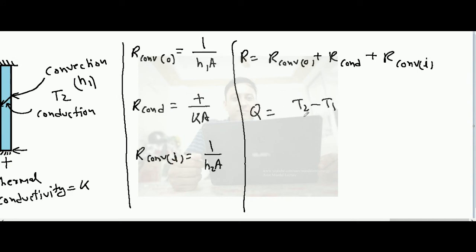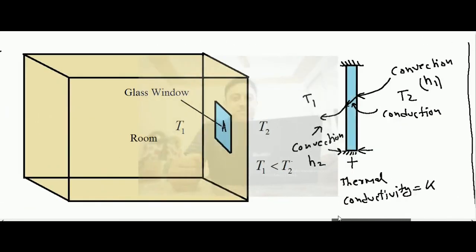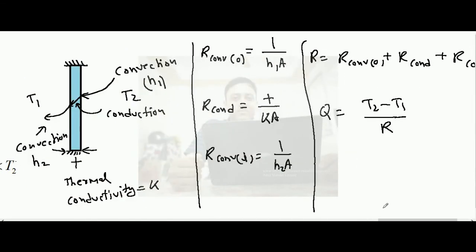The heat transfer rate is q = (t2 − t1) / R_overall. I hope with this lecture you have understood what a thermal resistance network is, how it follows the electrical resistance analogy, and how to solve numerical problems involving thermal resistance networks. Thank you.